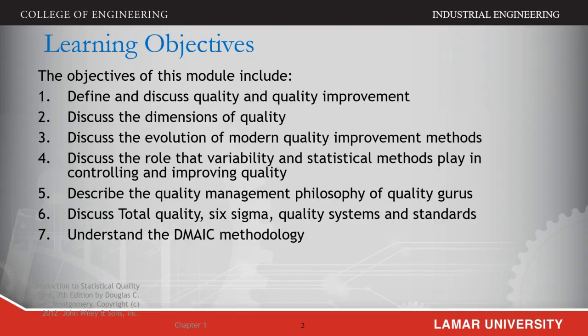The objectives for this module include the definition of quality improvement, the discussion of the dimensions of quality, the discussion of the evolution of modern quality improvement tools, the role of variability and statistical methods in controlling and improving quality, the quality management philosophy of quality gurus, total quality, Six Sigma, quality systems and standards, and understanding the DMAIC methodology. All these learning objectives include the material in chapters 1 and 2, which you need to read during this first week.